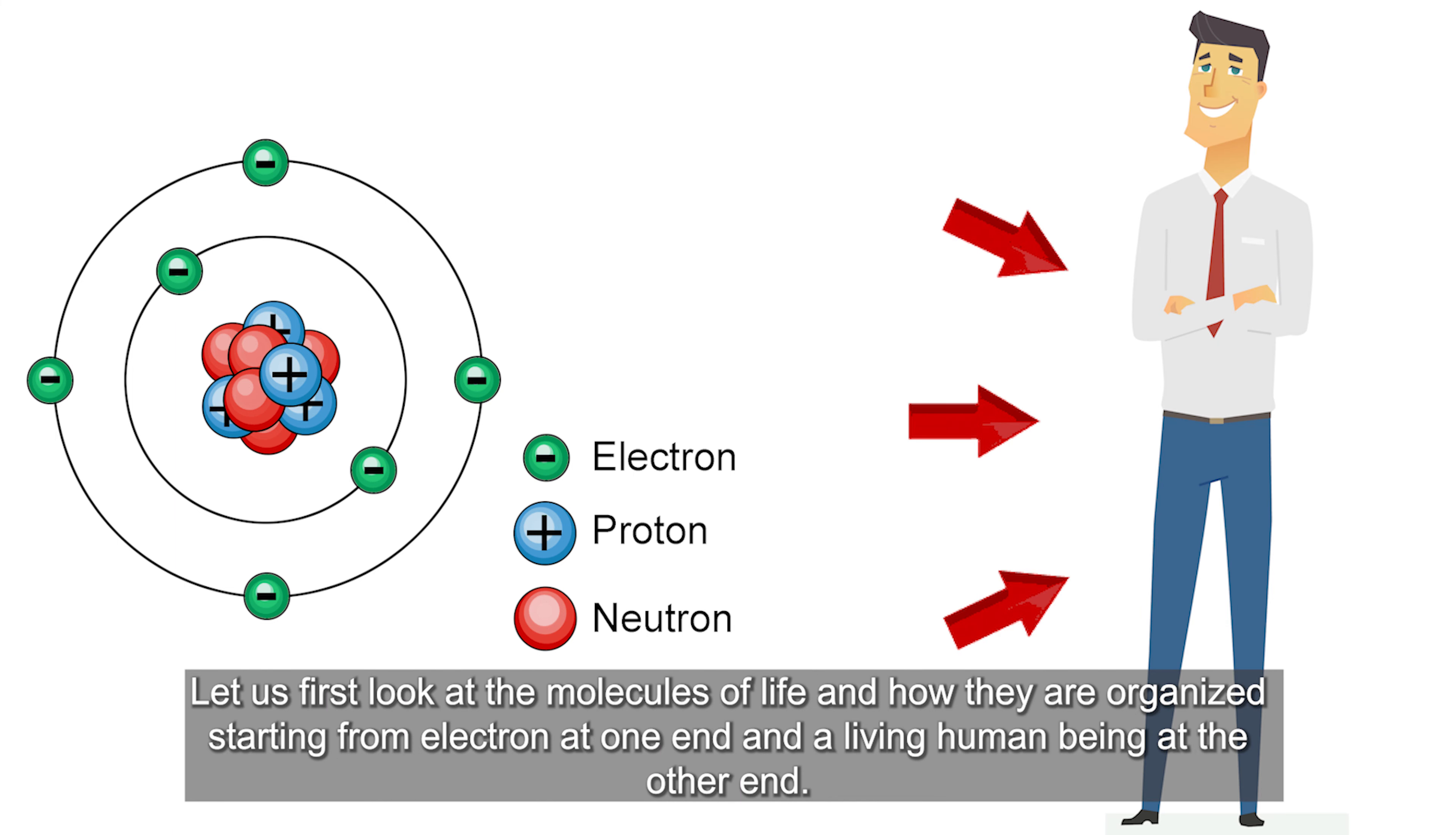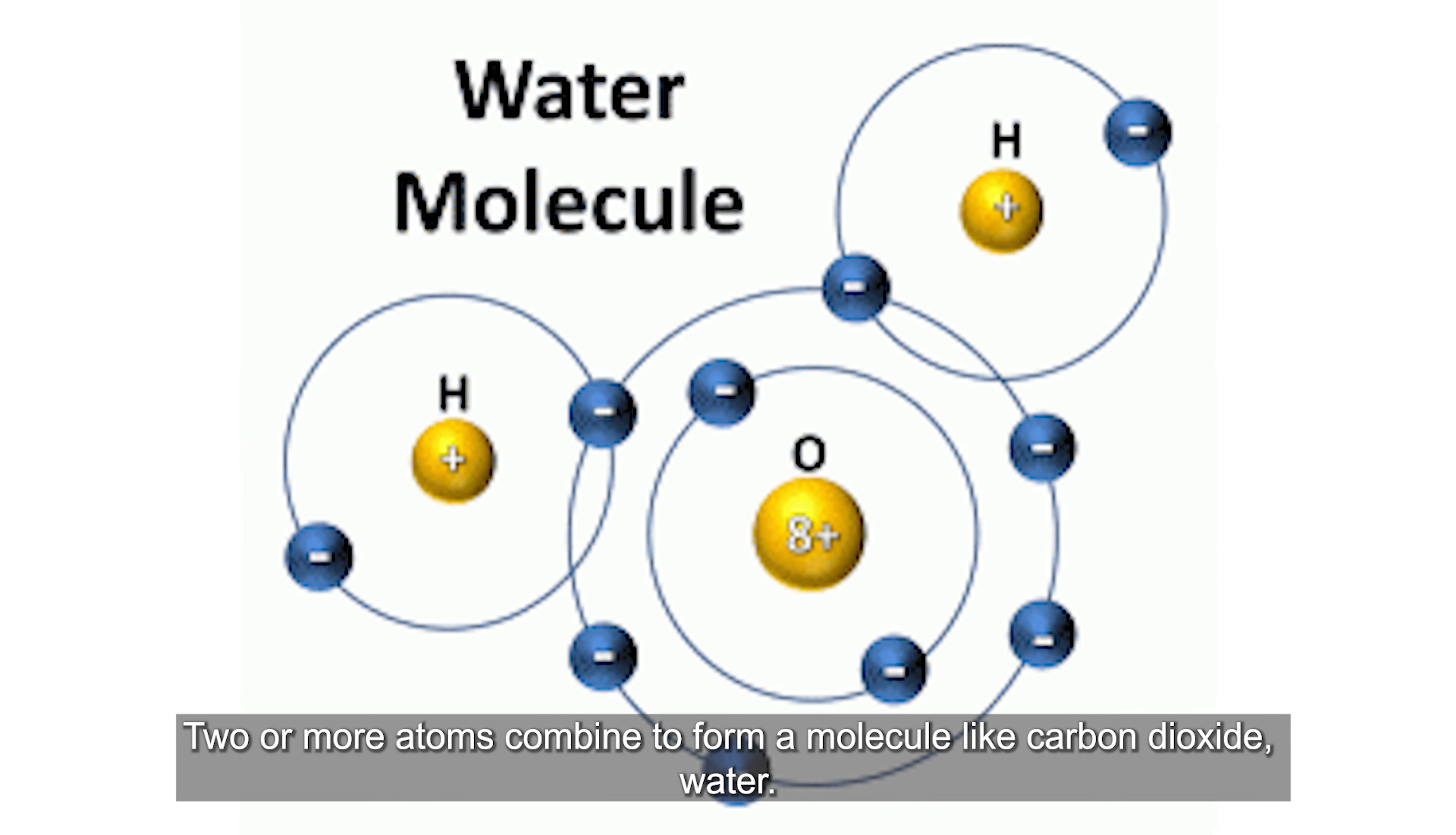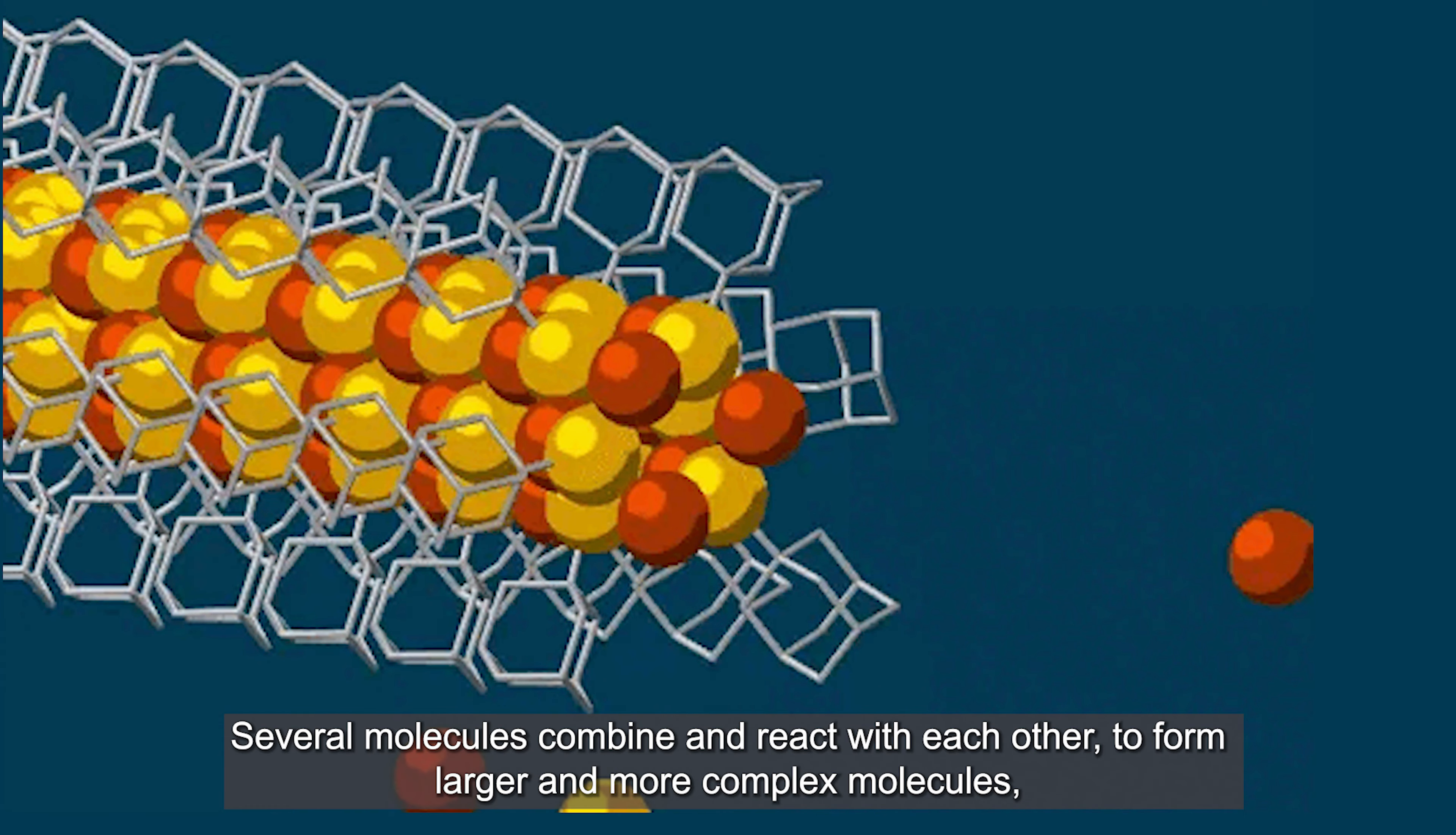Now let us take a look at the molecules of life first. And then we will see how are they organized starting from electron at one end and a living human being at the other end. The smallest level is atom like one carbon or one oxygen.